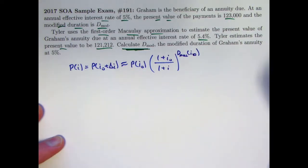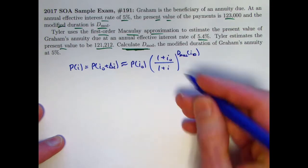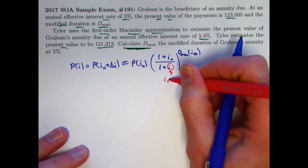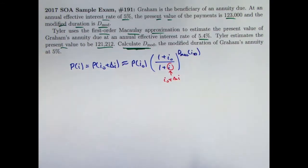Okay, that's why it's called the Macaulay approximation, is because we use the Macaulay duration. Alternatively, you could use i0 plus delta i here in the notation, but it means the same thing.